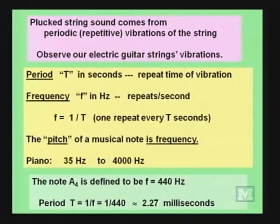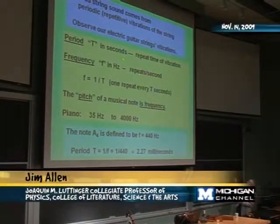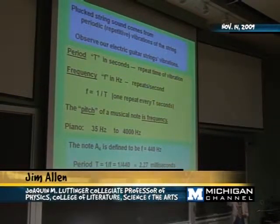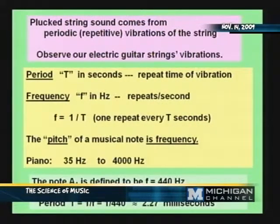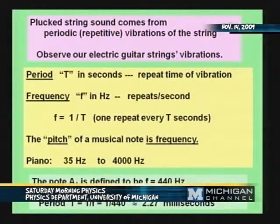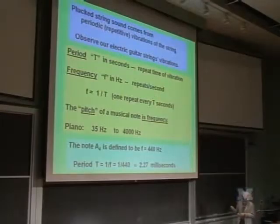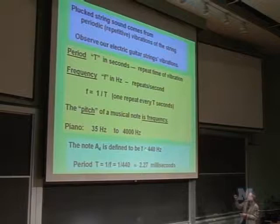In a vibration, the simple quantities we care about are the period — that's the repeat time of the vibration. You saw the string going back and forth, and the question is how long does it take to go down and back up again. The frequency is the number of repeats per second, which must be the inverse of the period. The pitch of a musical note is the frequency. The range of a piano is about 35 to 4,000 hertz. The note A4 is defined to be 440 hertz, and the period that goes with that is about two thousandths of a second.